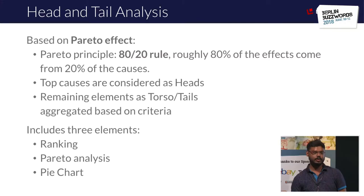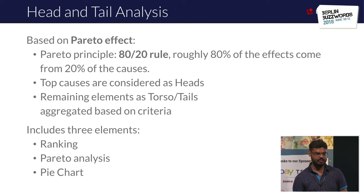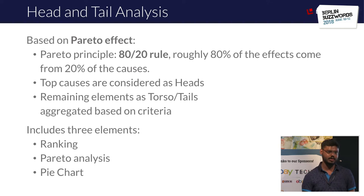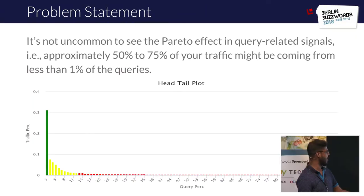The analysis report contains three elements. First, ranking: each head is identified individually while tails are aggregated based on a criteria. Second, you validate that you can see the Pareto effect in your data set by plotting a y-to-x axis graph, where you'll see a very big head and a small tail. Third, you plot a pie chart on heads, tails, aggregated tails, or a combination of the three to better visualize the data set.